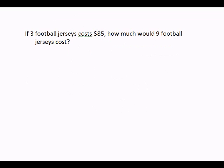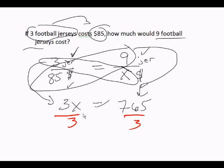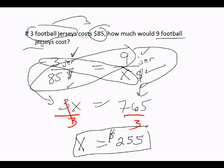Divide both sides by the number next to x. The number next to x is 3. 3 divided by 3 is 1x. 765 divided by 3 is $255. Now this is dollars, remember, because the x is on the dollar spot. So 9 jerseys cost $255 because 3 jerseys cost $85.